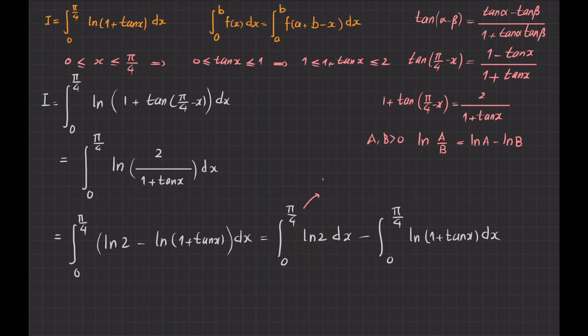And this is super simple to calculate because ln 2 is just a constant. So what I do, I can write ln 2, bring it out, and then integral from 0 to π/4 dx, but this is just simply ln 2 multiplied. The integral of dx is simply x from 0 to π/4, which becomes π/4 ln 2.